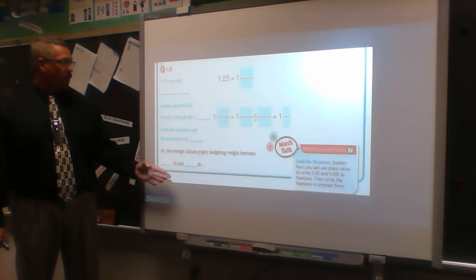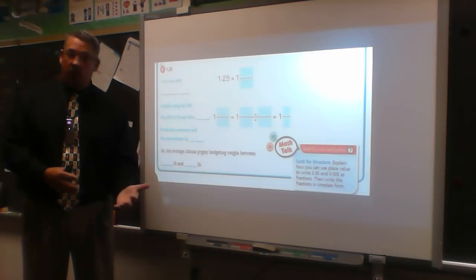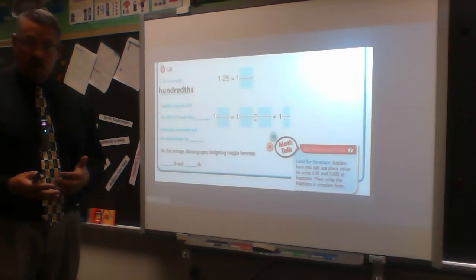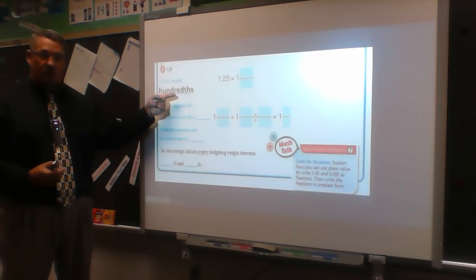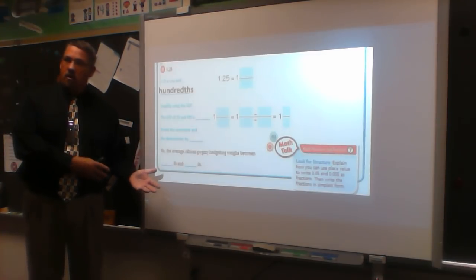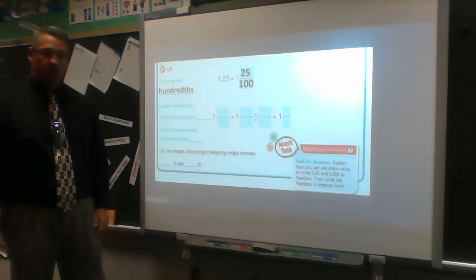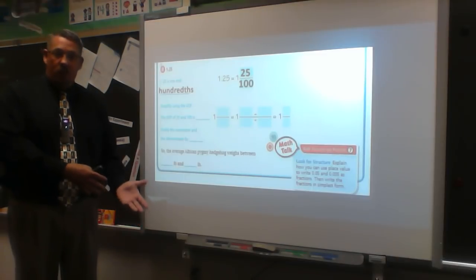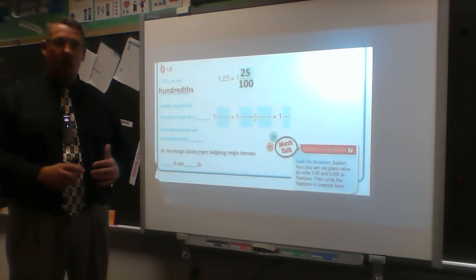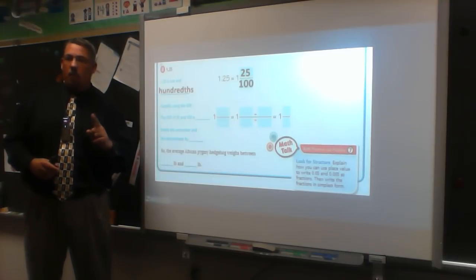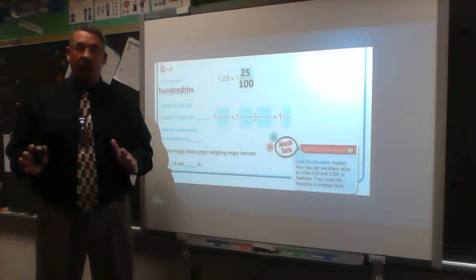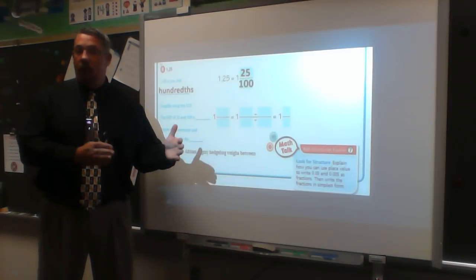For 1.25, I say it as 'one and twenty-five hundredths.' The five is in the hundredths position, so as a fraction that's 1 and 25 over 100. I can reduce by fives — dividing twice — or use the GCF directly. I'll never say you're wrong if you choose either way; mathematically there's more than one way to reduce, as long as it's mathematically sound.